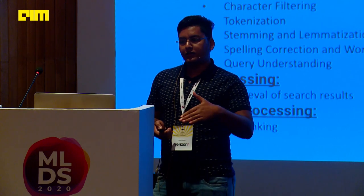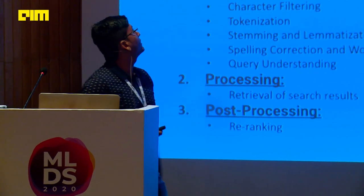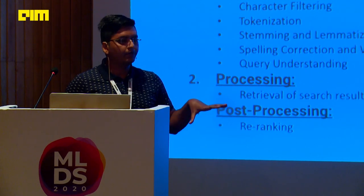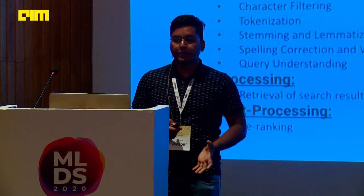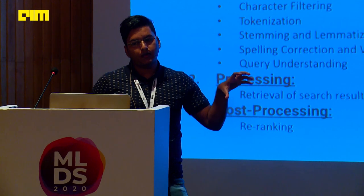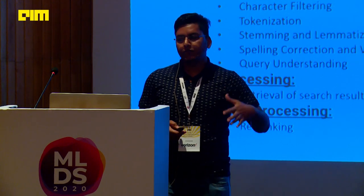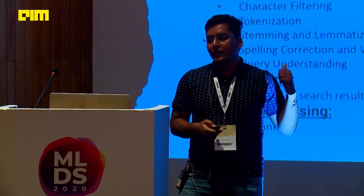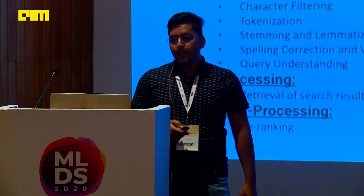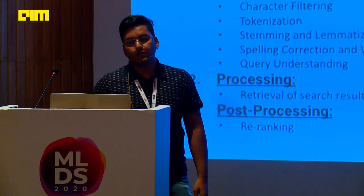The user journey starts when they type something. If you're searching something like a grocery item, the query goes through the engine before the result comes up. First, we tokenize the search term into words, then do stemming and lemmatization to change the keyword form. Spelling correction also needs to be done. The last step is query understanding, which we'll discuss in more detail. Then post-processing handles re-ranking to make results more relevant.